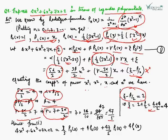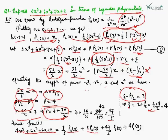Putting all values α = 8/5, β = 4, γ = 47/5, ζ = 4 back into the equation, we get: 4x³ + 6x² + 7x + 2 = (8/5)P₃(x) + 4P₂(x) + (47/5)P₁(x) + 4P₀(x). In this way we can express any polynomial in terms of Legendre polynomials.